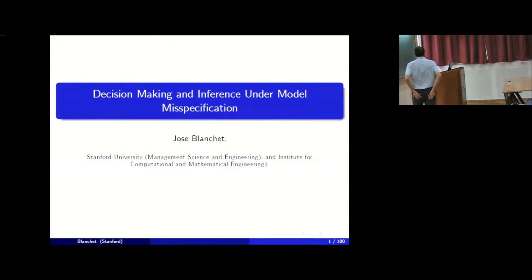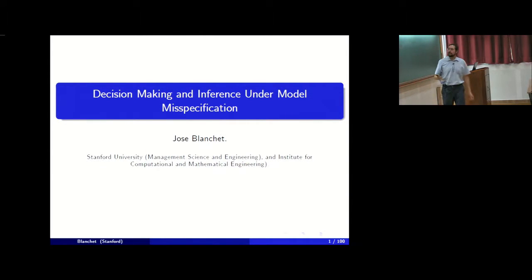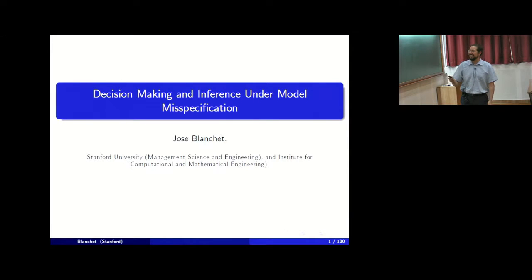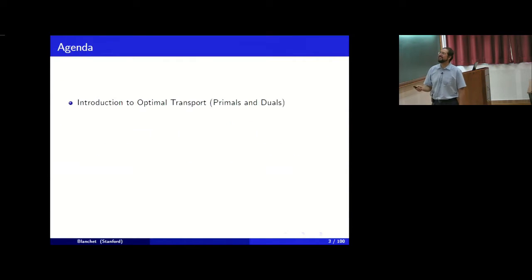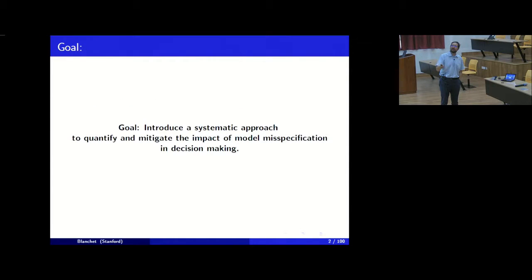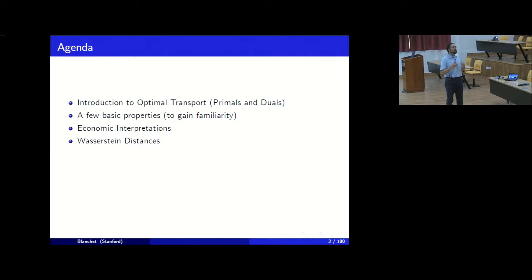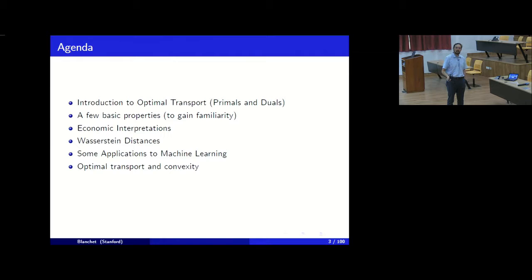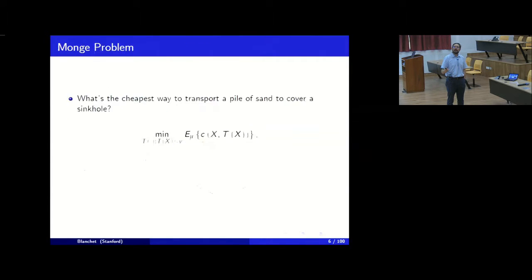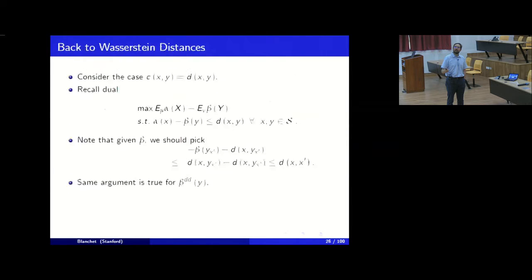This is the third and last lecture. We started talking about model misspecification in the last lecture, and we discussed optimal transport as the tool we use to specify perturbations. The amount and type of misspecification is controlled by the optimal transport costs. Today I'm going to talk about applications to machine learning and statistics.